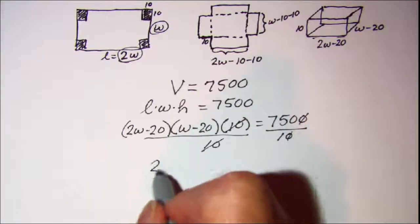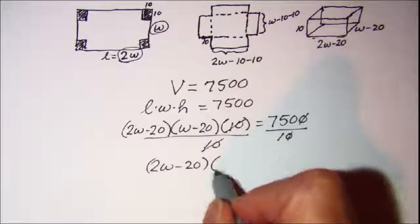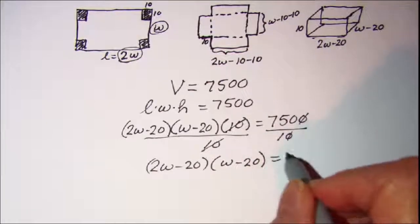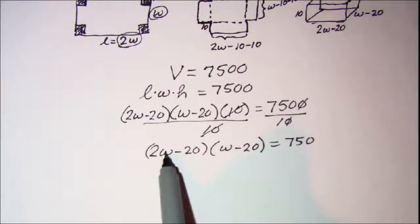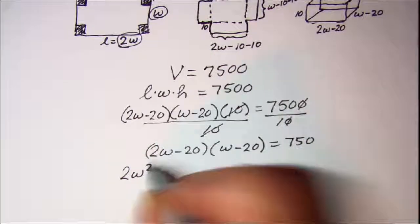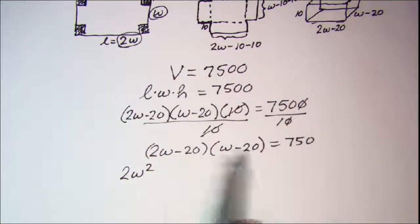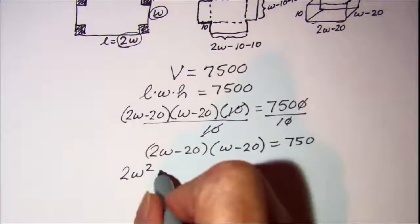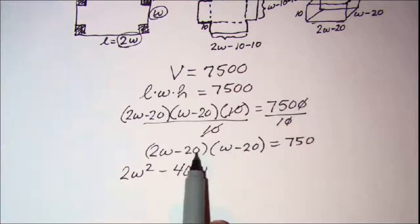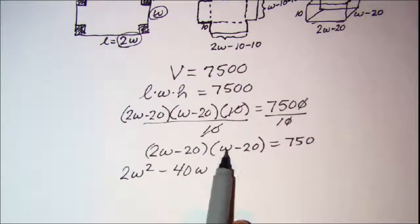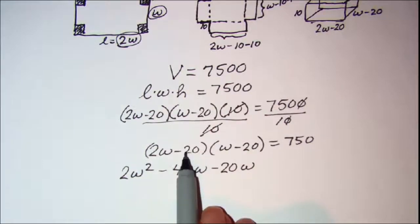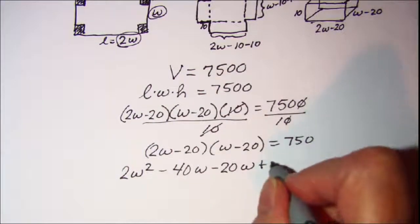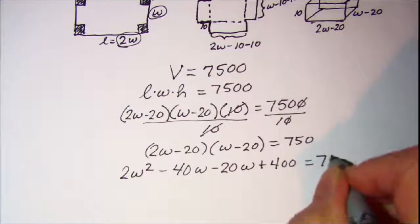So now I have (2W minus 20) times (W minus 20) equals 750. Using FOIL to multiply these two binomials: the first terms give 2W²; the outer terms give negative 40W; the inner terms give negative 20W; and the last terms give positive 400. That equals 750 on the right side.